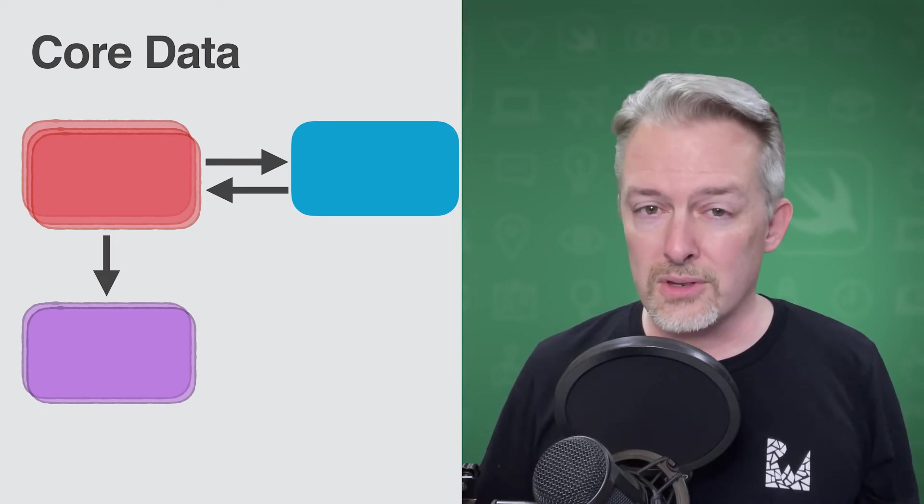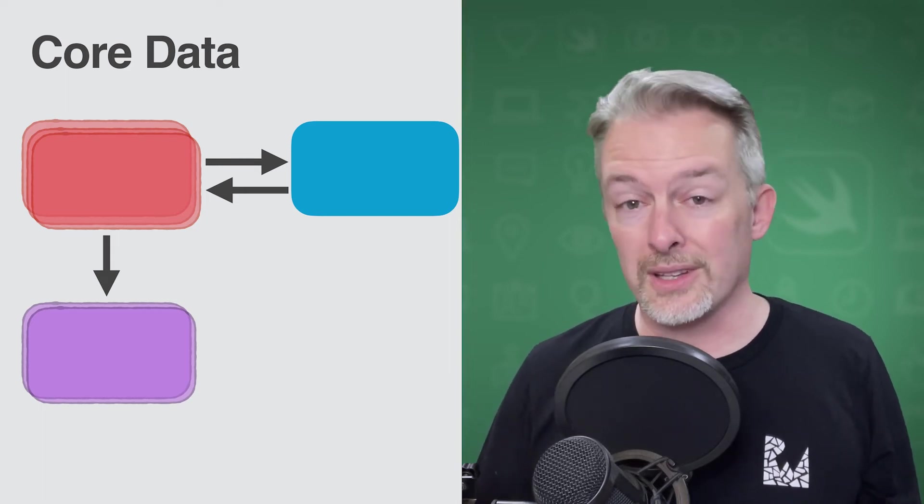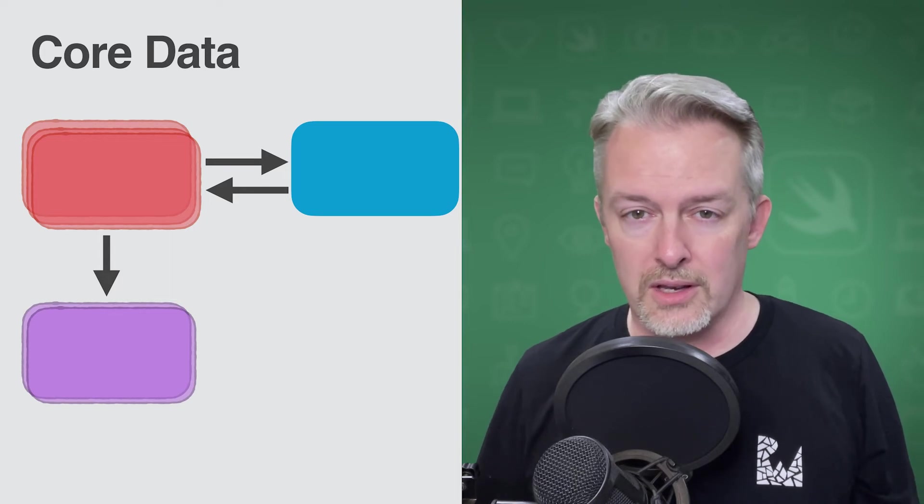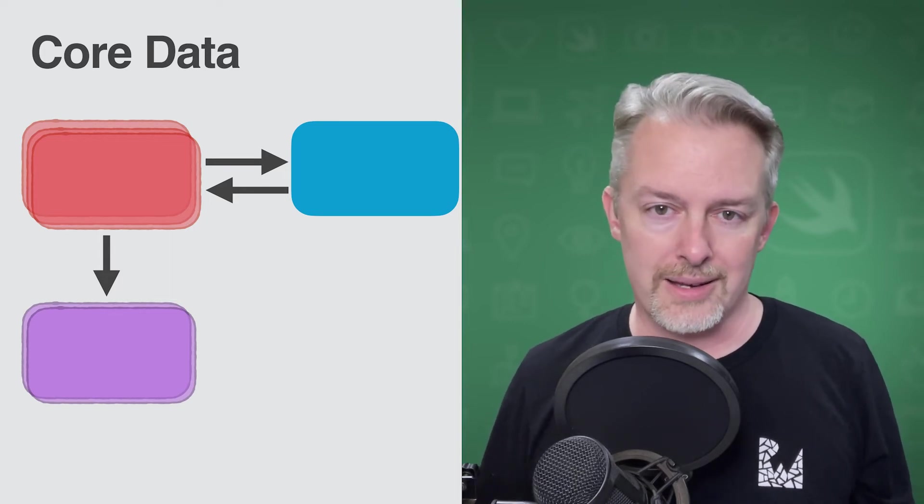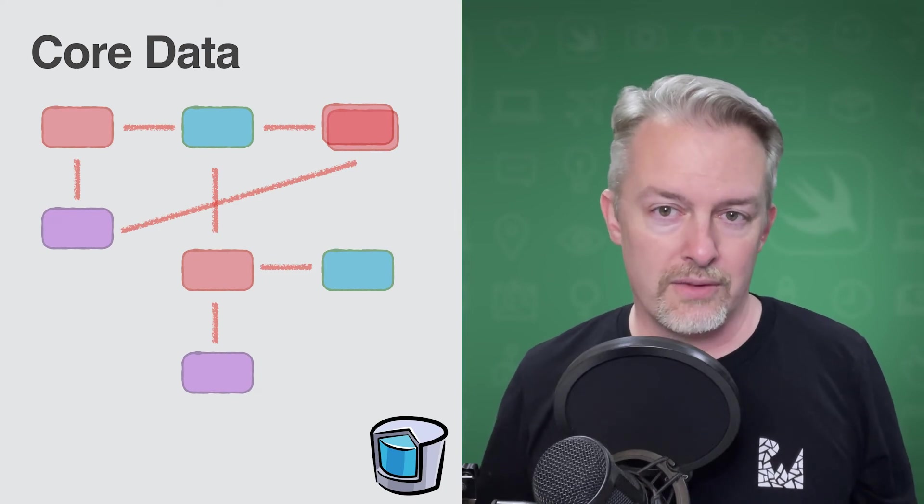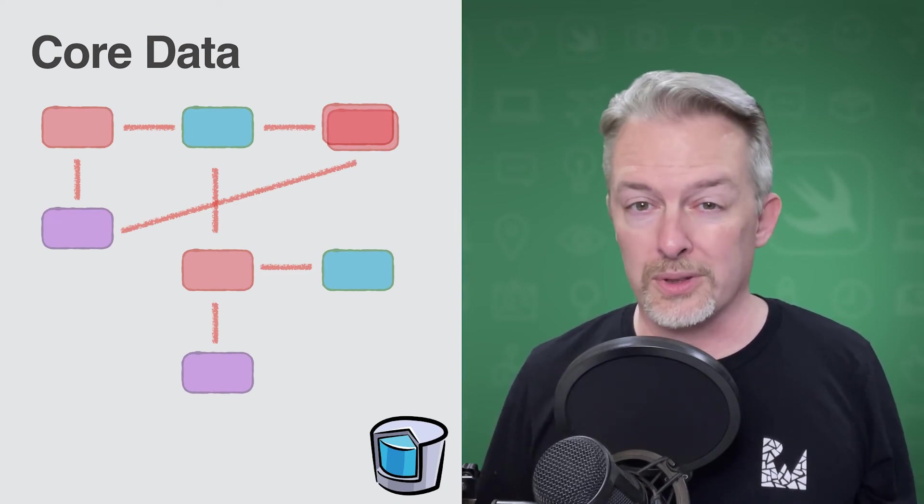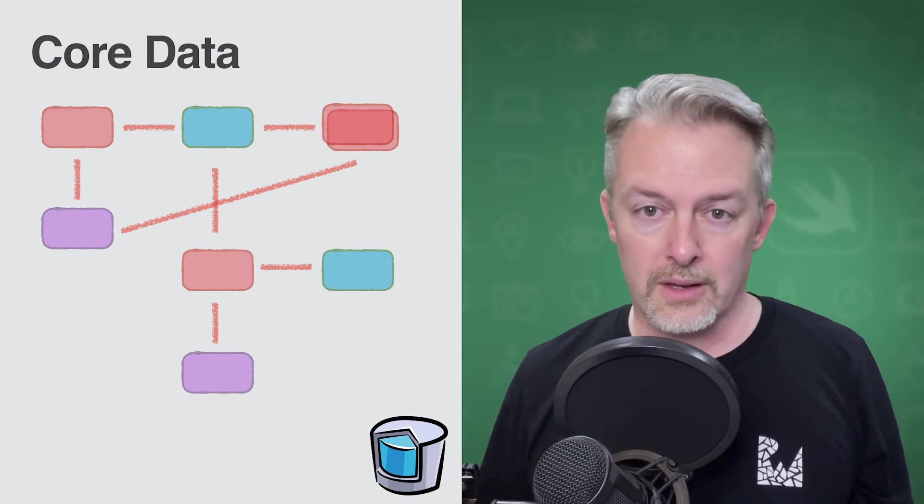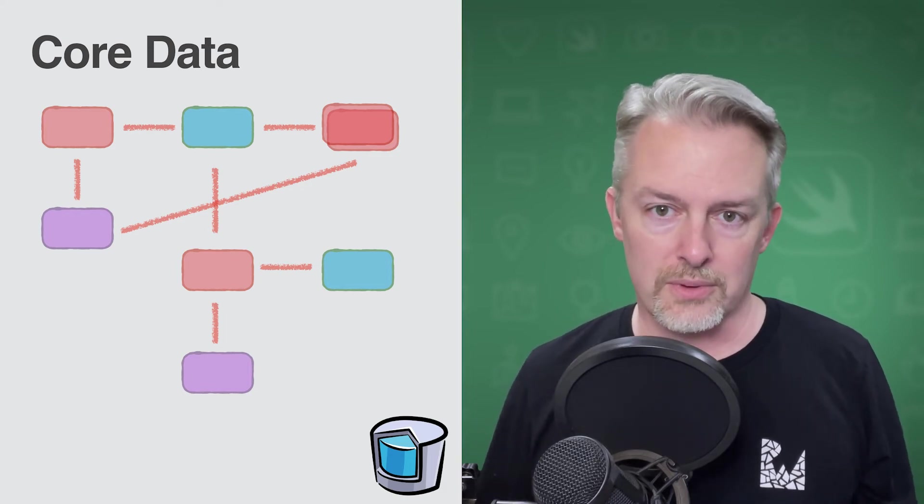As this app grows, the different objects and their relationships to one another start to become more complex. This is what we call an Object Graph. The various objects in the model layer, along with their relationships to one another, and the rules that govern these relationships.